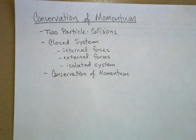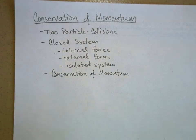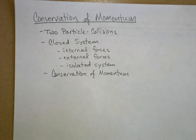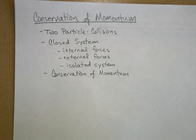Conservation of momentum — we're going to get to the first great conservation law of physics. There are three quantities that turn out to be conserved in our universe: one of them is momentum, another one is energy, which we're going to talk about in the next chapter, and the other one is angular momentum, which we'll cover in AP Physics.